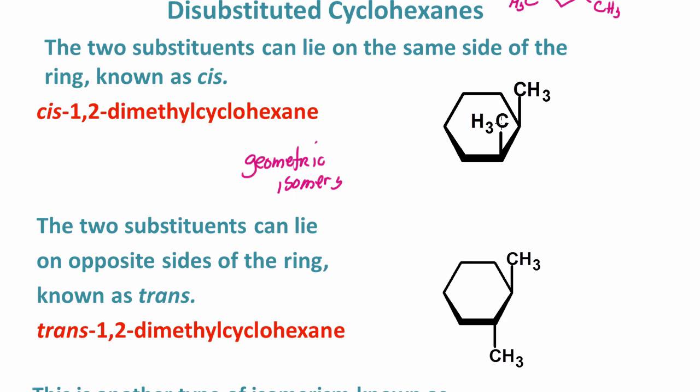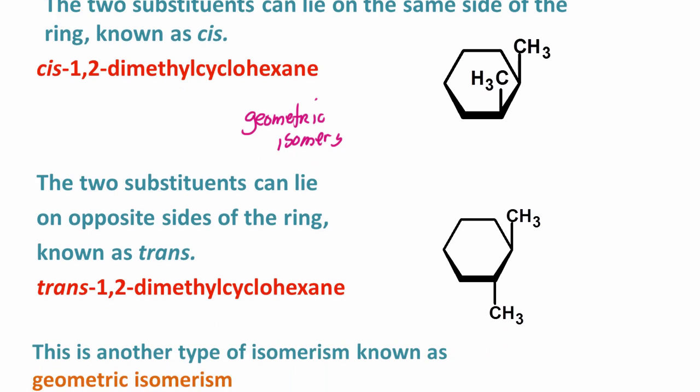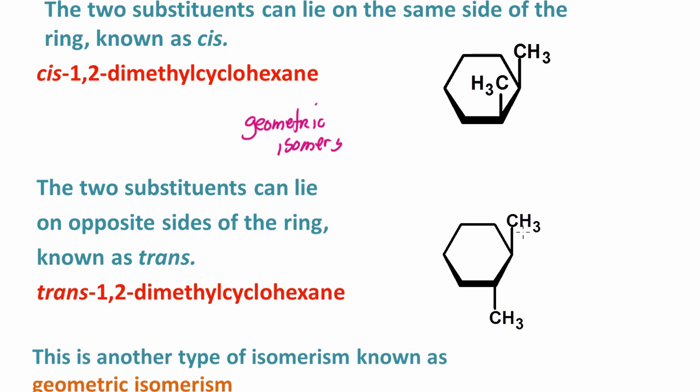Here's the difference. When you have the two substituents that lie on the same side of the ring, we call that cis - they're both pointing up. In this case, where we have the substituents on opposite sides of the ring - one is pointing up, one is pointing down - this is trans.